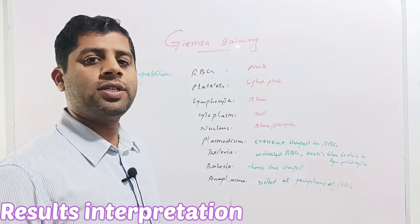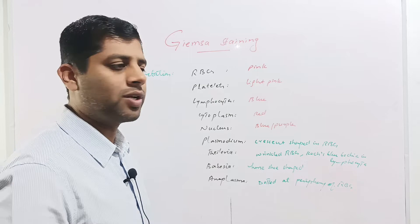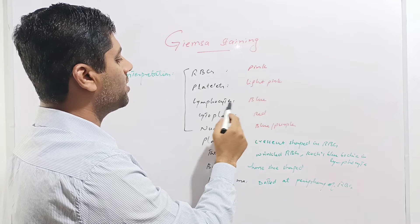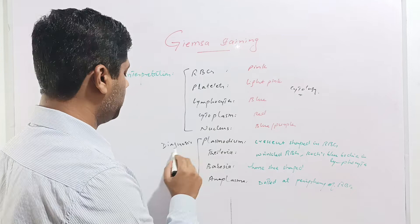Now the results interpretation of the Giemsa stain slide examined under the microscope. Giemsa stain can also be used for the study of cells or cytology. These are the cytological features which can be studied under the Giemsa stain technique. Red blood cells appear pink under the microscope, platelets appear light pink, lymphocytes appear blue, cytoplasm appears red, and nucleus appears blue or purple. This is the application of Giemsa stain in cytology.